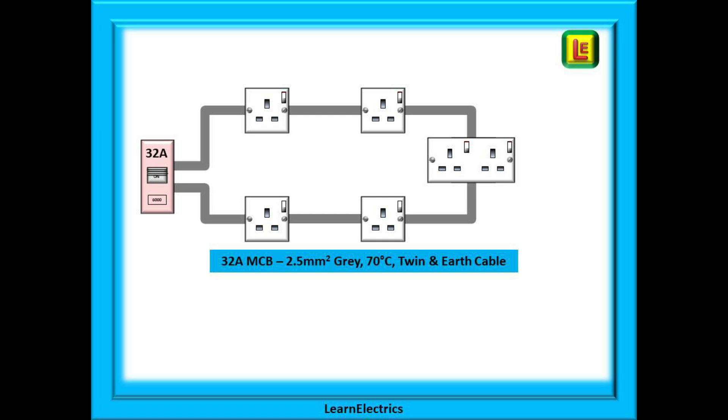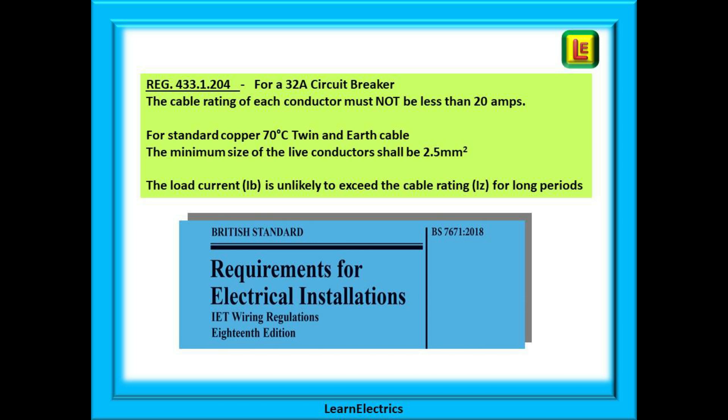We can begin with the wiring regulations. Regulation 433.1.204 tells us that for a 32 amp ring circuit the conductors, the line and neutral, must have a rating of at least 20 amps. It also tells us that for standard 70 degree twin and earth cable we should choose a size that is not less than 2.5 millimeters.